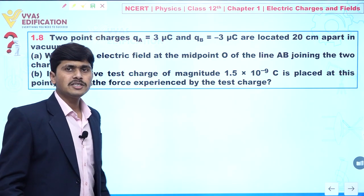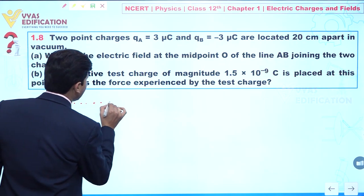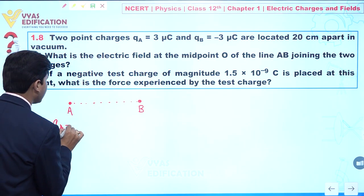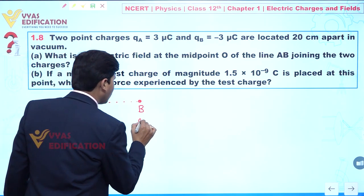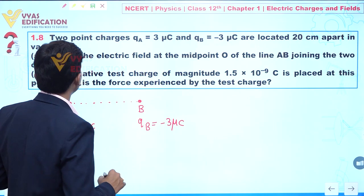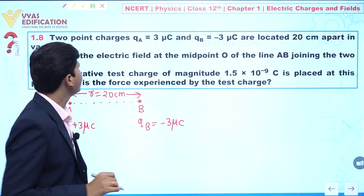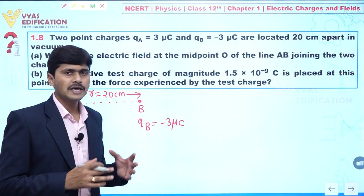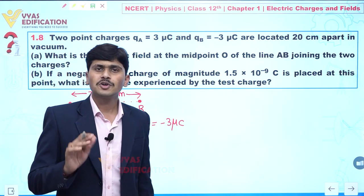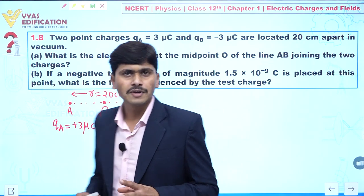Let's set up the diagram. We have point charge A and point charge B. The value of qA is +3 microcoulomb and qB is -3 microcoulomb. They are located 20 centimeters apart, so r = 20 cm. We take midpoint O on the line joining A and B.